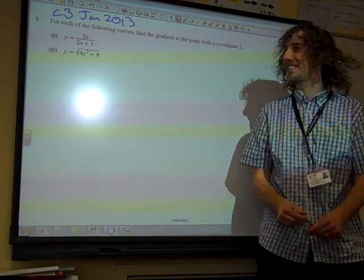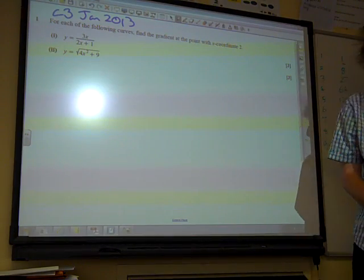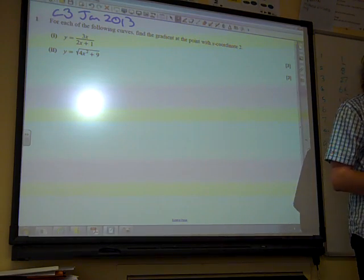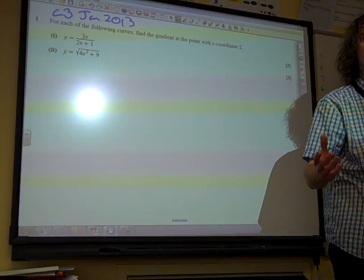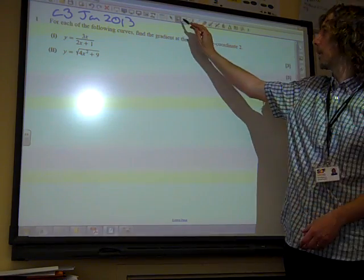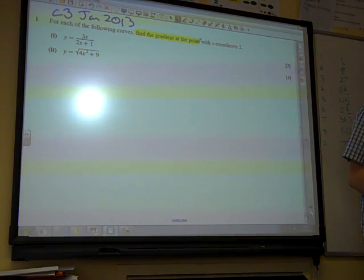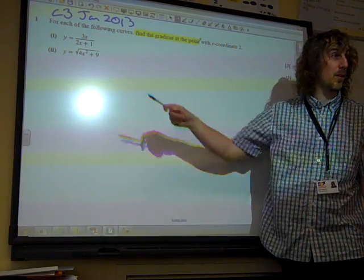So, this is a nice starter, isn't it? Each of the following curves, find the gradient at the point with x coordinate 2. Have you noticed how rarely they say find dy/dx? There's always some code that you have to unpick. So, as soon as we see find the gradient, that tells us we're going to have to differentiate. What kind of differentiation thing is the first one?